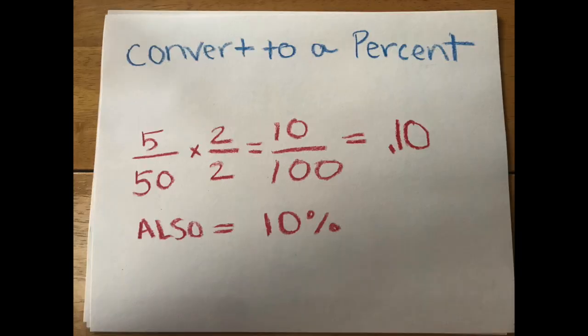When you are ready, it is time to convert your fraction to a percentage. Having the denominator be 100 will again help us convert our fraction easily. The numerator of your fraction, when 100 is your denominator, is your percentage. So, 10 over 100 is also 10 percent.